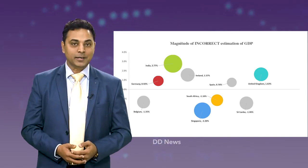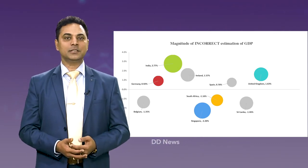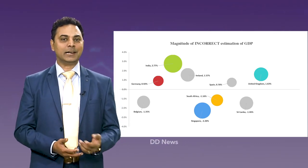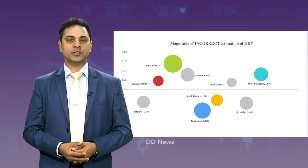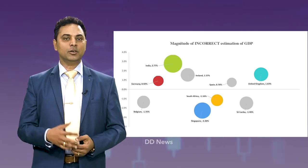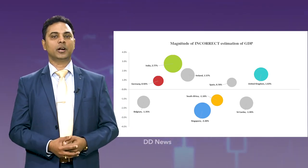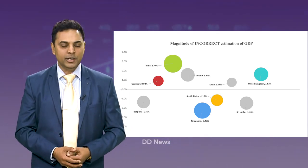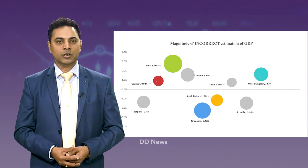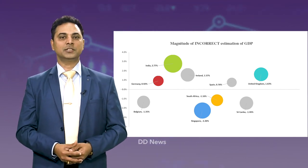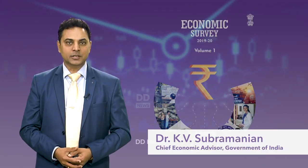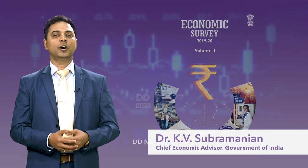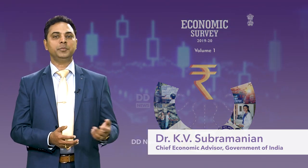But when the model is estimated correctly using a proper apples-to-apples comparison, none of these 52 countries including India is either over or underestimated. In sum, concerns of overestimation of India's GDP are unfounded.